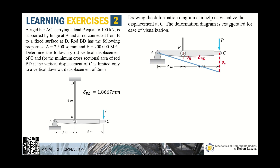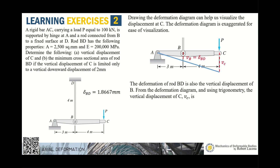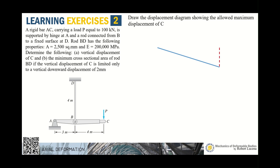Using similar triangles from the schematic diagram, the deformation of BD relates to the displacement of C: δ_BD / 3 = v_C / 7. Substituting δ_BD = 1.87 mm gives the vertical displacement of node C as 4.35 mm.